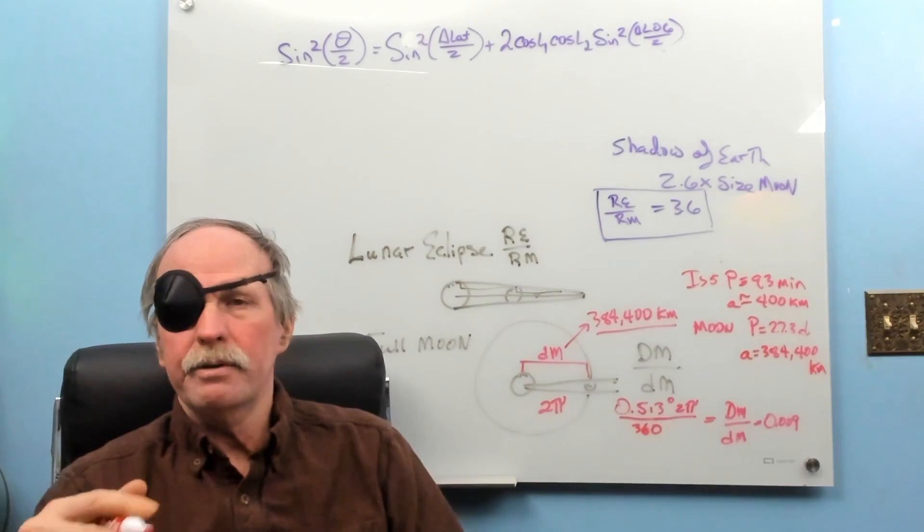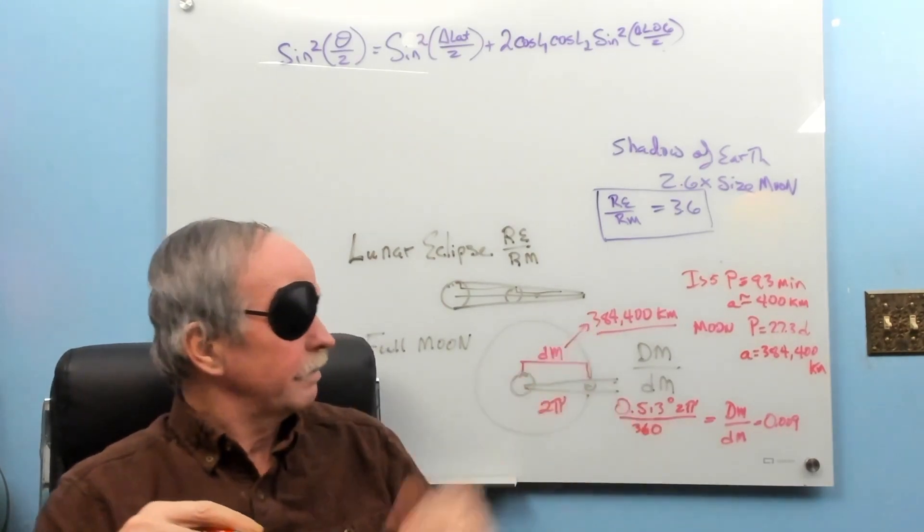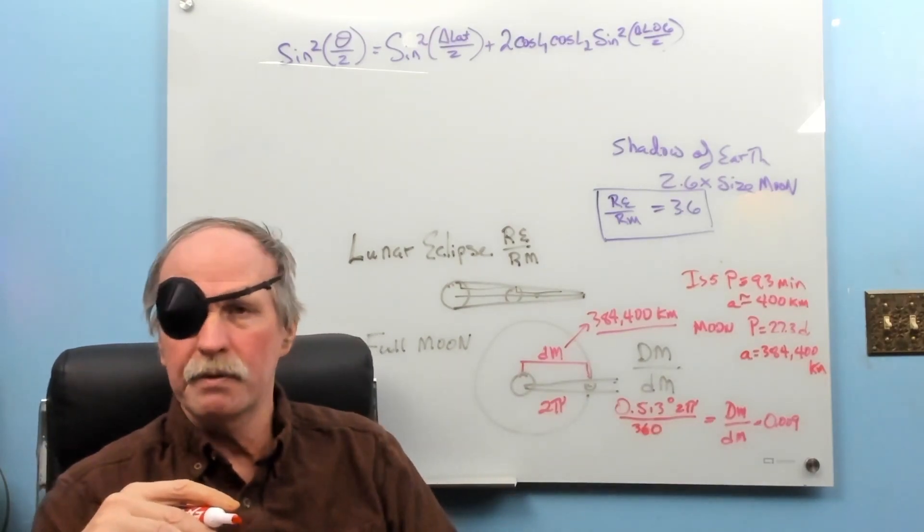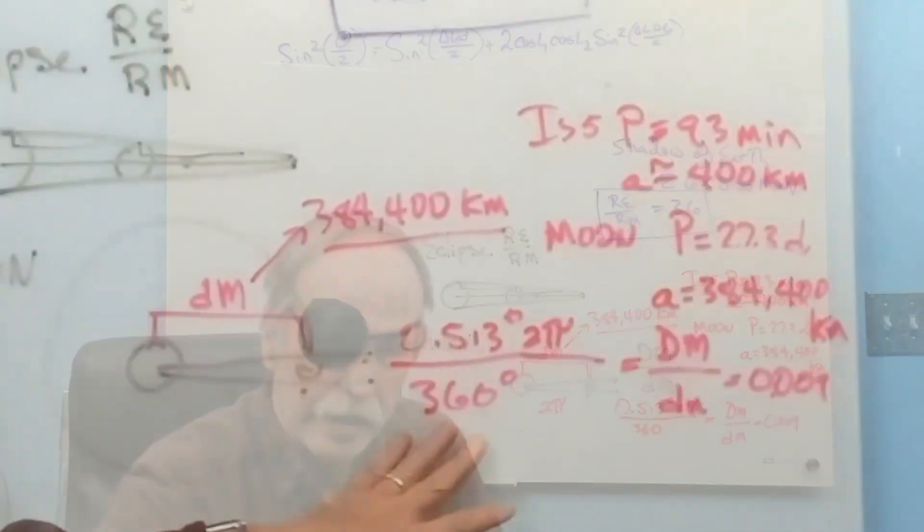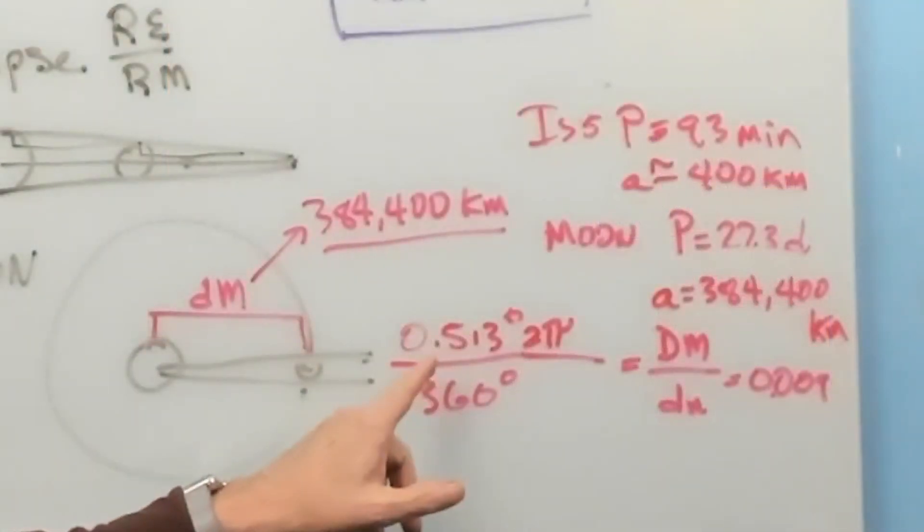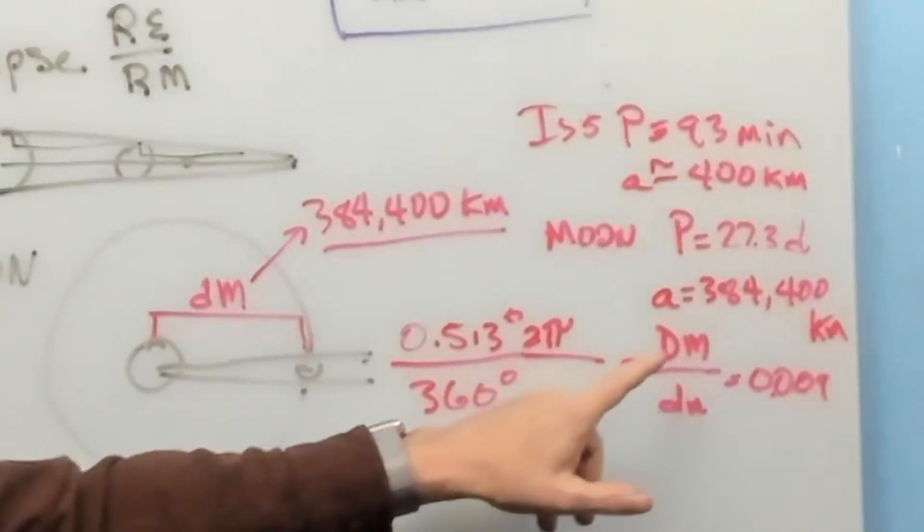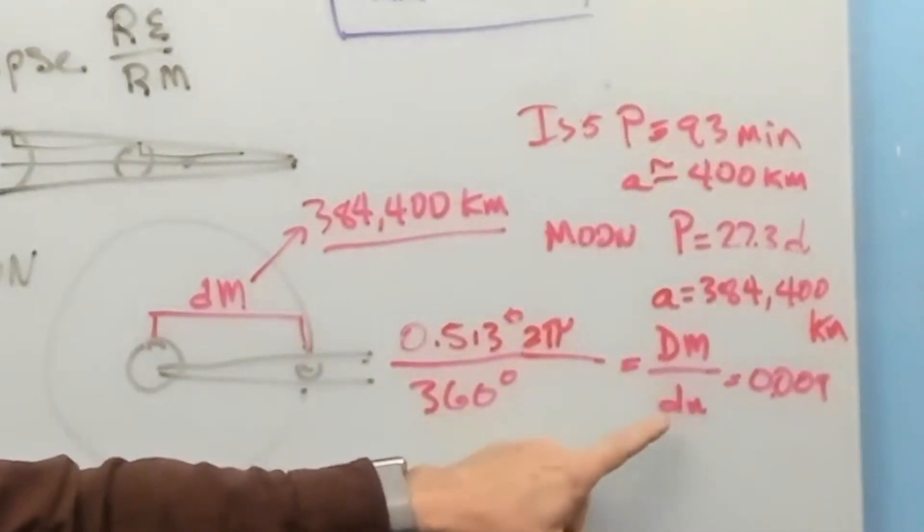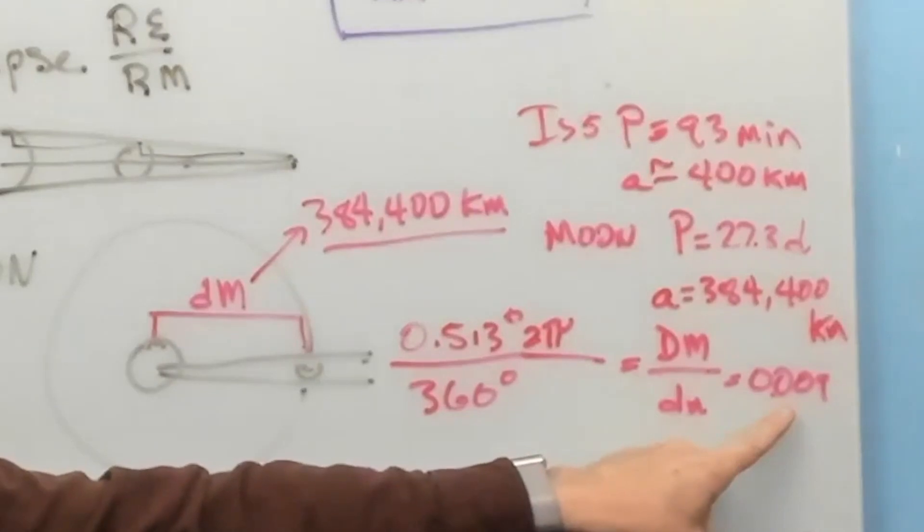Currently, we know the distance from the Earth to the Moon to a matter of millimeters. 384,400 kilometers is the average distance from the Earth to the Moon. So, here's our rewritten formula. 0.513 times 2pi over 360 equals the diameter of the Moon over the distance to the Moon. And if you do the math, it's 0.009 is the ratio.